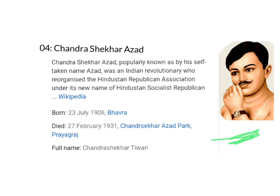Chandrasekhar Azad was an Indian revolutionary who had taken up arms against the British government. Once surrounded by British soldiers, he shot himself dead rather than being shot and killed by them. He died on 27th February 1931 at Chandrasekhar Azad Park, Prayagraj.